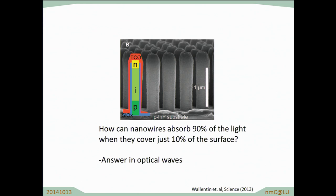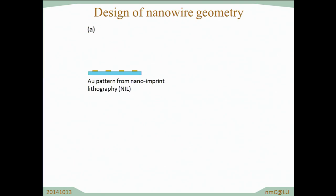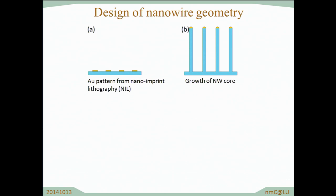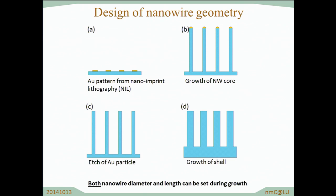What we would like to understand is how does this happen, and the answer lies in optical waves. But before we go into these optical waves, I would like to show you what the nanowires look like for us doing optics. This is all about geometry — how we design nanowire geometry — where we begin with just a substrate patterned with gold catalyst particles, after which we grow epitaxially the nanowires, perhaps etch away the gold particle, and do more radial growth.